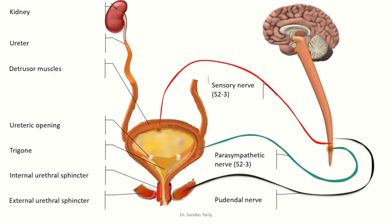The process of micturition takes place through the micturition reflex, which is a bladder-to-bladder autonomic reflex involving both sensory and motor components. As soon as the bladder is filled with urine, it stretches the bladder wall. This stretch stimulates the stretch receptors in the bladder wall, leading to increased sensory impulses traveling via the sensory nerves toward the sacral segments S2 and S3 of the spinal cord.